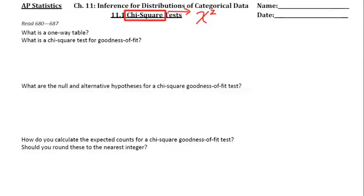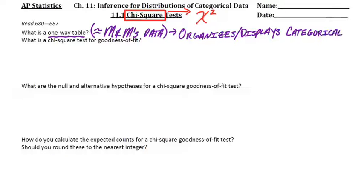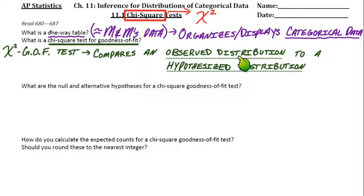The first part here says, what is a one-way table? We can think about our M&M's data. A one-way table just takes categorical data and organizes it or displays it. What is a chi-square test for goodness of fit? We're going to abbreviate chi-square GOF for goodness of fit. It compares an observed distribution, one that we observe in reality, to a hypothesized distribution, one that somebody claims is true. This is about an entire distribution of categorical data.